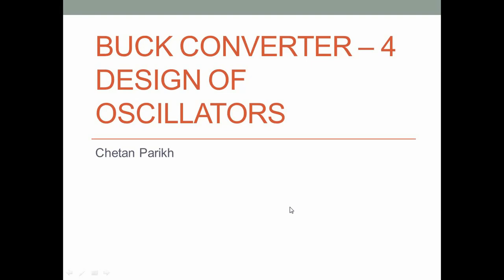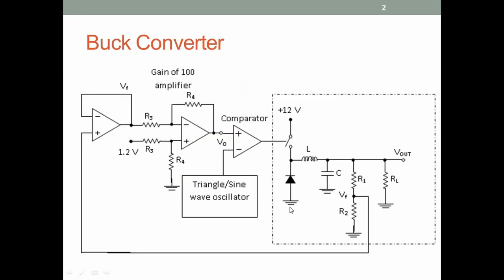This is the fourth in our series of lectures on the buck converter. In this lecture we will talk about designing a triangle wave oscillator. Recapping quickly, this is the circuit we are designing and we are now on the last block, which is the oscillator. I have written 'triangle or sine,' and by the end of this lecture there will be more clarity about why there is a sine wave option here also.